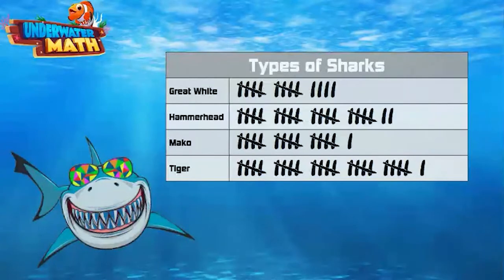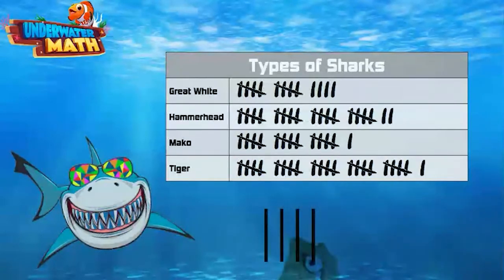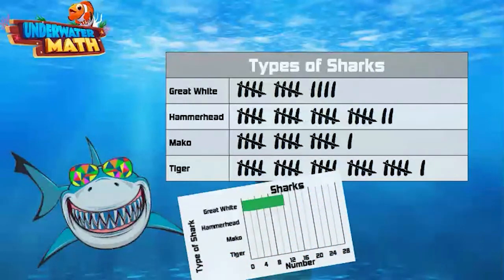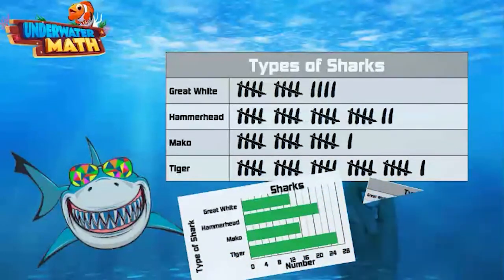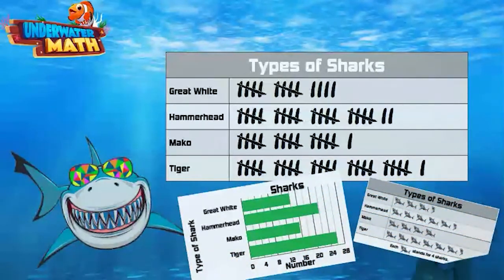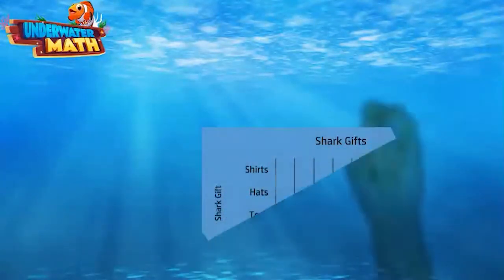Fortunately, tally marks are grouped in bundles of five — four vertical lines and one diagonal line. You can use frequency tables to make bar graphs, pictographs, or other types of graphs. I happen to have a frequency table right here.